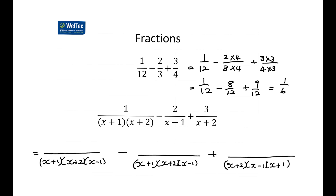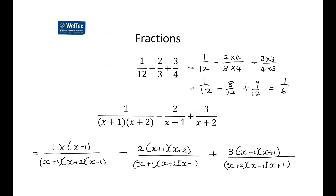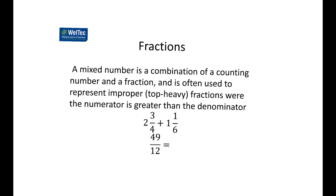For the algebraic fractions: the first fraction had (x plus 2)(x plus 1) on the bottom, so it gets multiplied by (x minus 1), giving 1 times (x minus 1). The second fraction was over (x minus 1), so it needs to be multiplied by (x plus 1)(x plus 2), giving 2 times (x plus 1)(x plus 2). The last fraction was over (x plus 2), so it needs to be multiplied by 3 times (x minus 1)(x plus 1). When we've done topic 2 we'll simplify that.